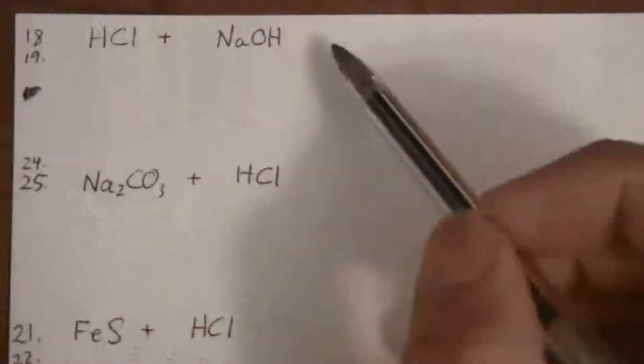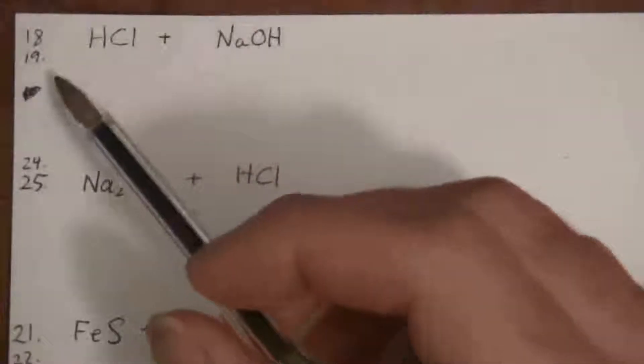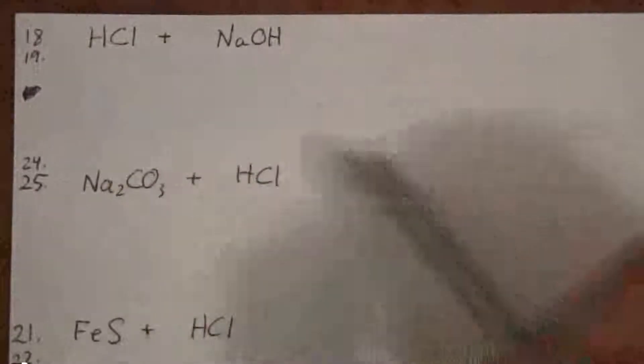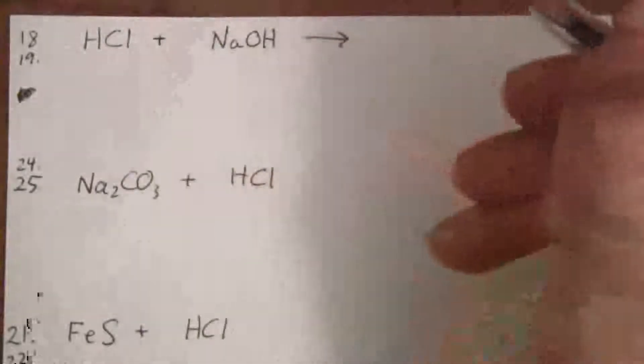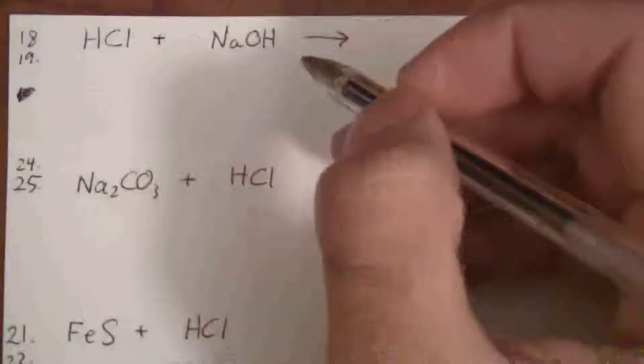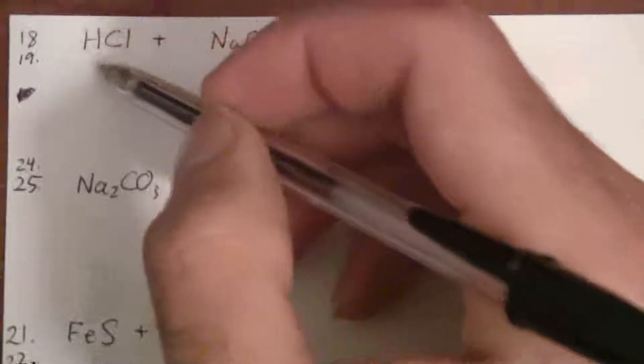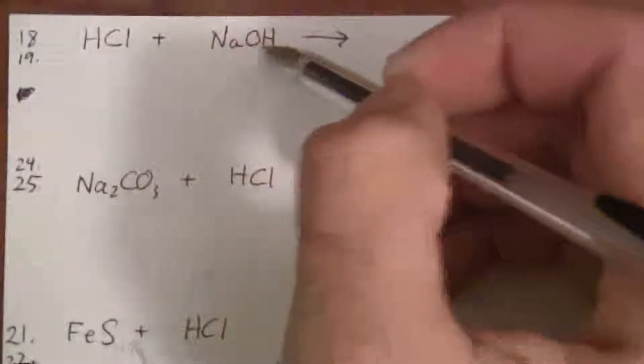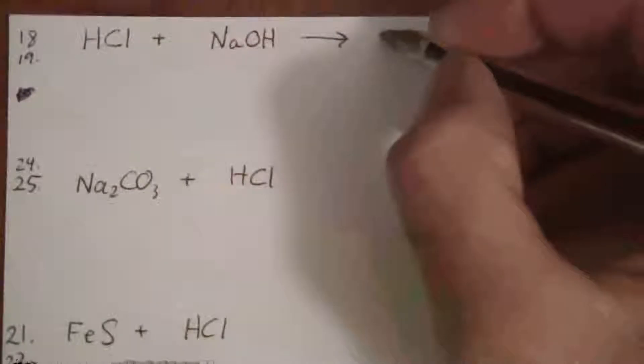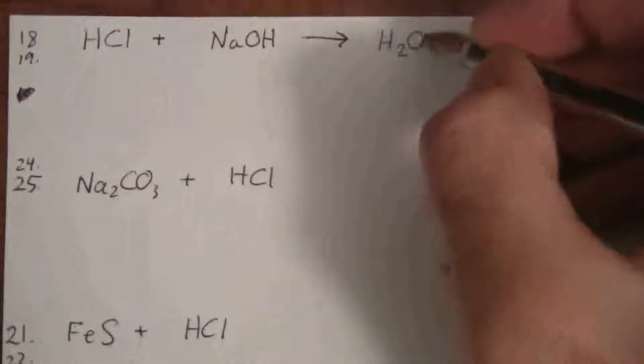Moving on to 18 and 19 — these come in pairs. We're writing the balanced equation, then the balanced net ionic equation. Here we have HCl and NaOH. These will react, and just like any double displacement, the hydrogen will move to the hydroxide and we'll get H₂O.